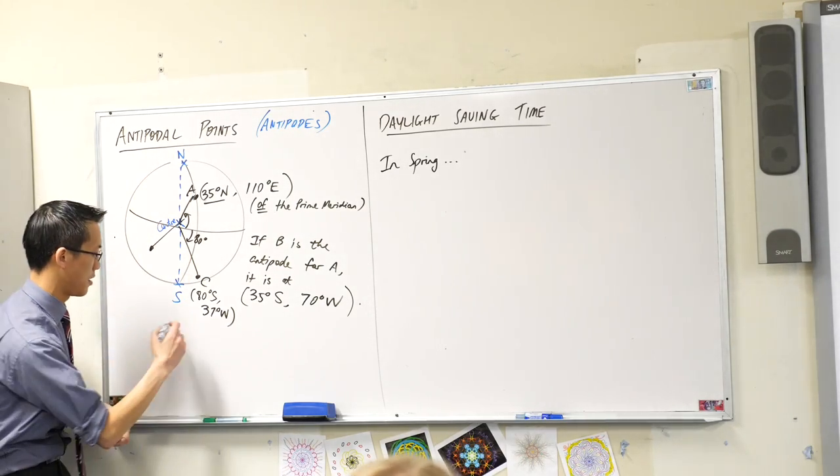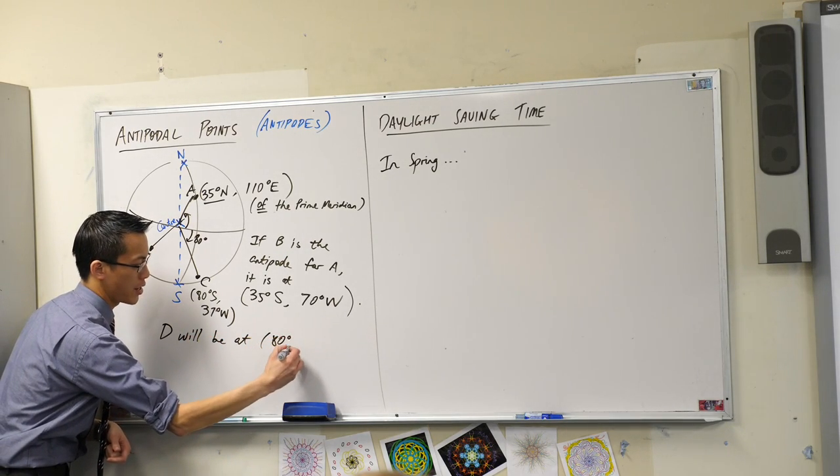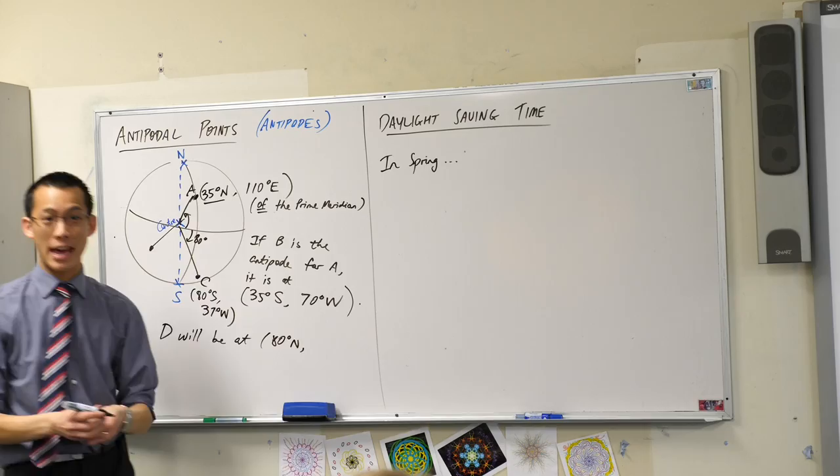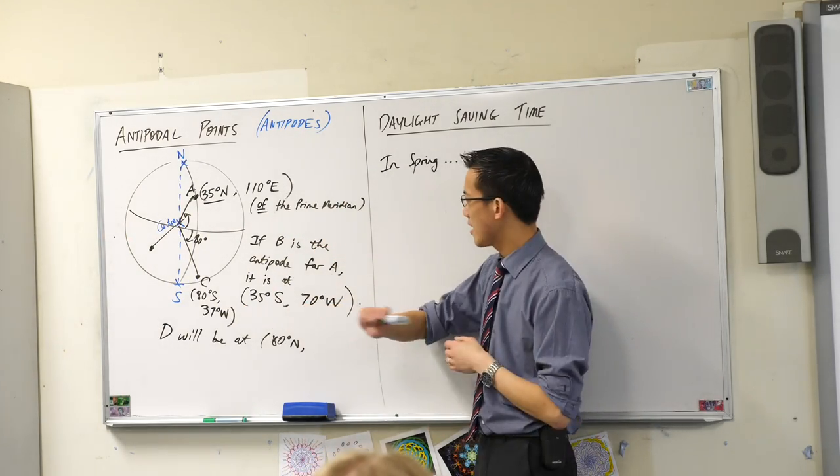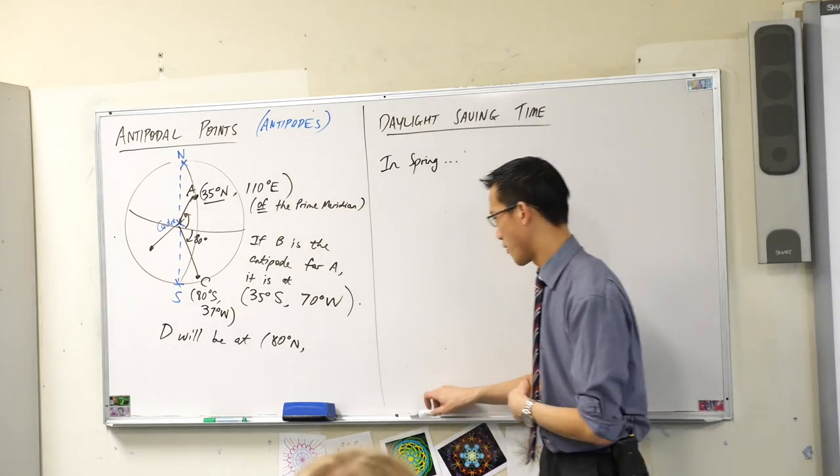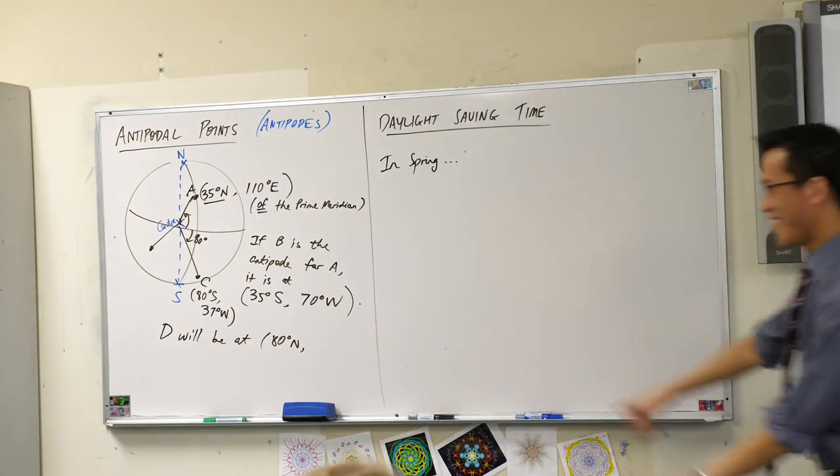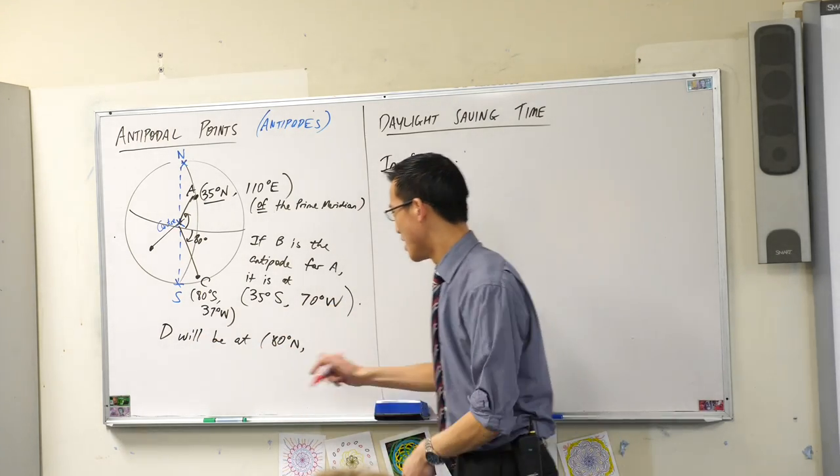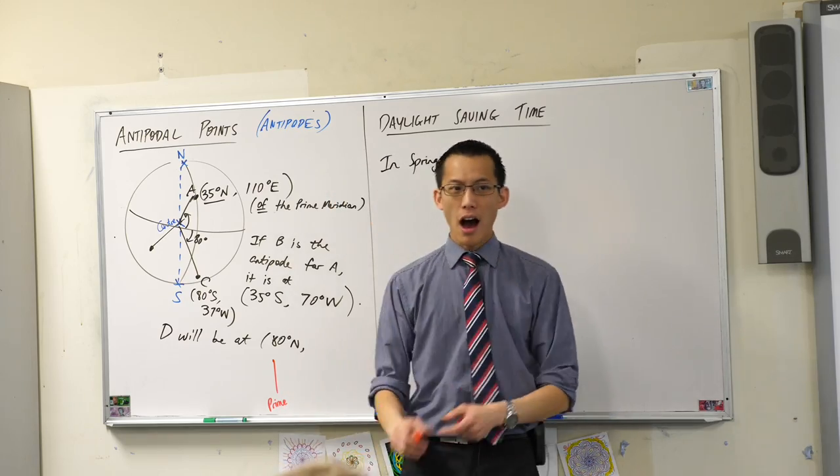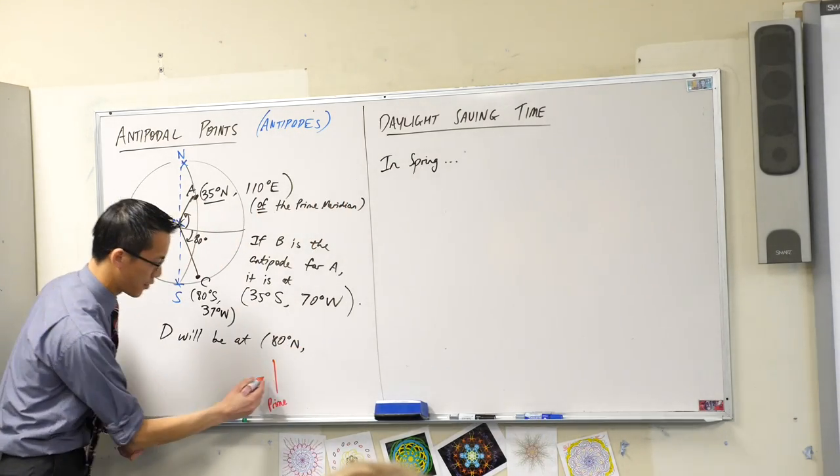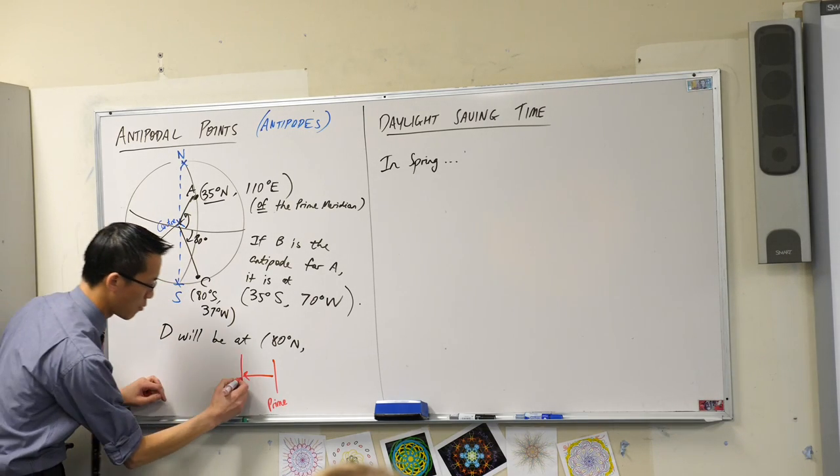So D will be at 80 degrees north. Now let's think about this. You're on the... I'm actually going to draw this because I'm waving my arms around too much. You are 37 degrees west right now of Greenwich. So if I say, let's make the prime meridian here. I'm drawing to the west, so that's to the left, right? Over here. That's where C is somewhere on this line. So I've gone 37 degrees west.